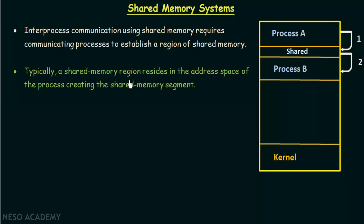Typically, a shared memory region resides in the address space of the process creating the shared memory segment. So where does this shared memory region actually reside? The answer is that it resides in the address space of the process creating the shared memory segment. In this example, process A wants to communicate to process B, so process A will create the shared memory region and it will lie in the address space of process A, meaning process A is the one initiating the communication.